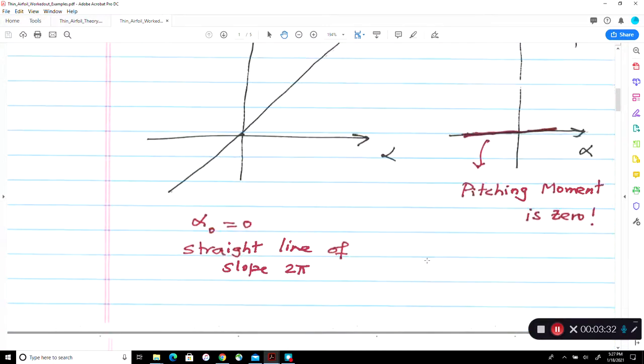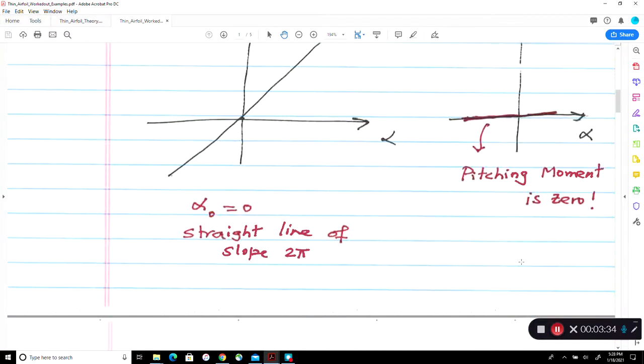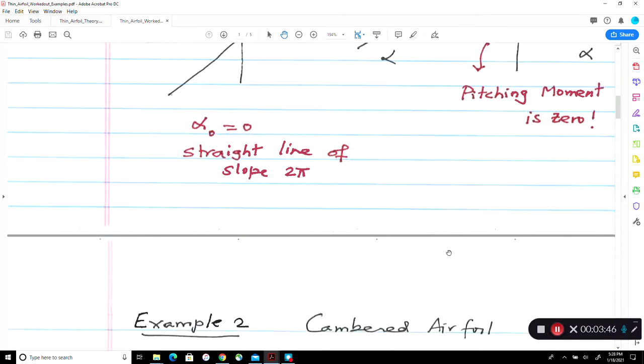How about the CD? CD is zero because of the d'Alembert paradox. In this theory, no boundary layer, no separation, no skin friction drag, no pressure drag. In two dimensions, we get zero lift, zero drag rather.